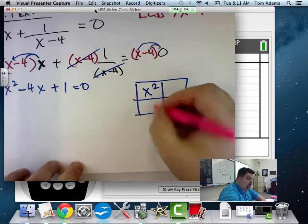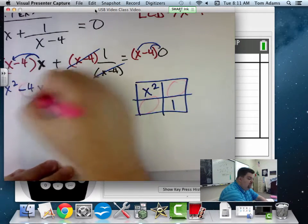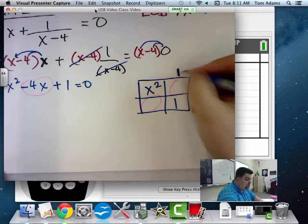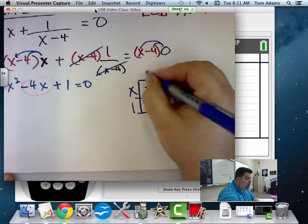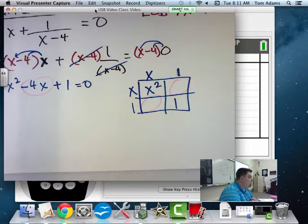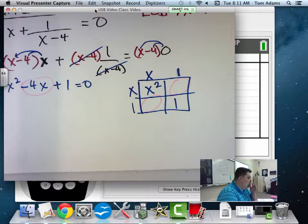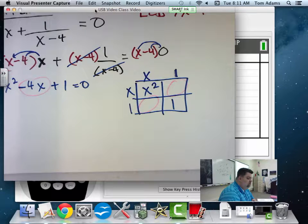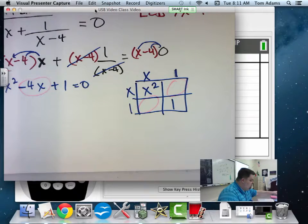Remember that when we factor it, this plus this has to equal this. Problem is, there's only two factors for one, right? One and one. I could do 4 and 1 fourth, or 8 and 1 eighth, but it won't work out to be negative 4. So now what do I do? Yes. Quadratic equation.